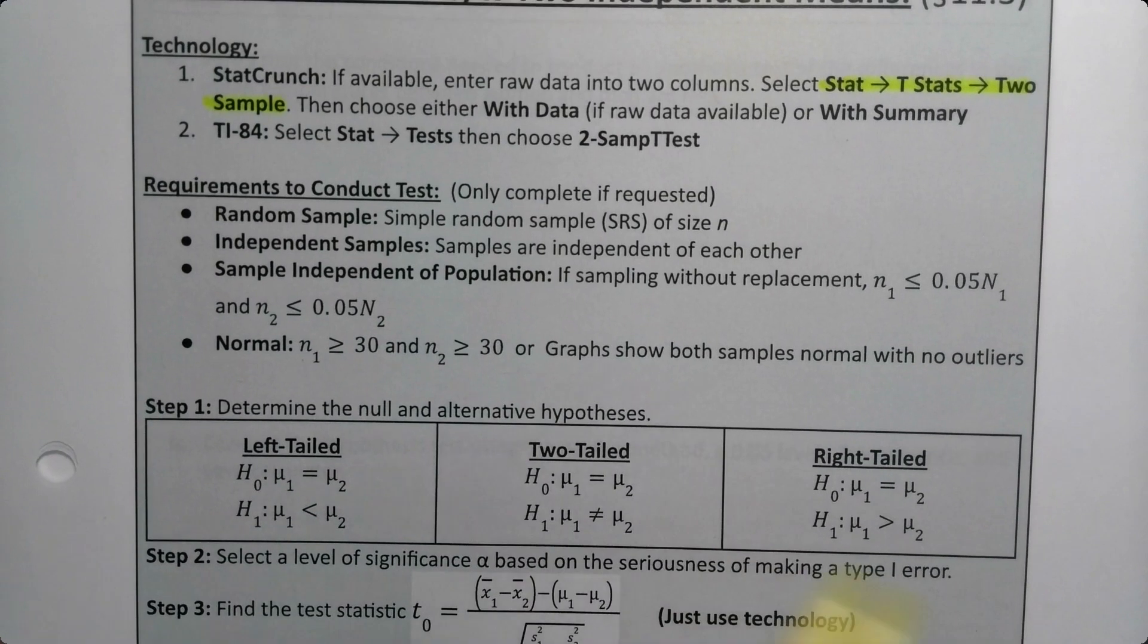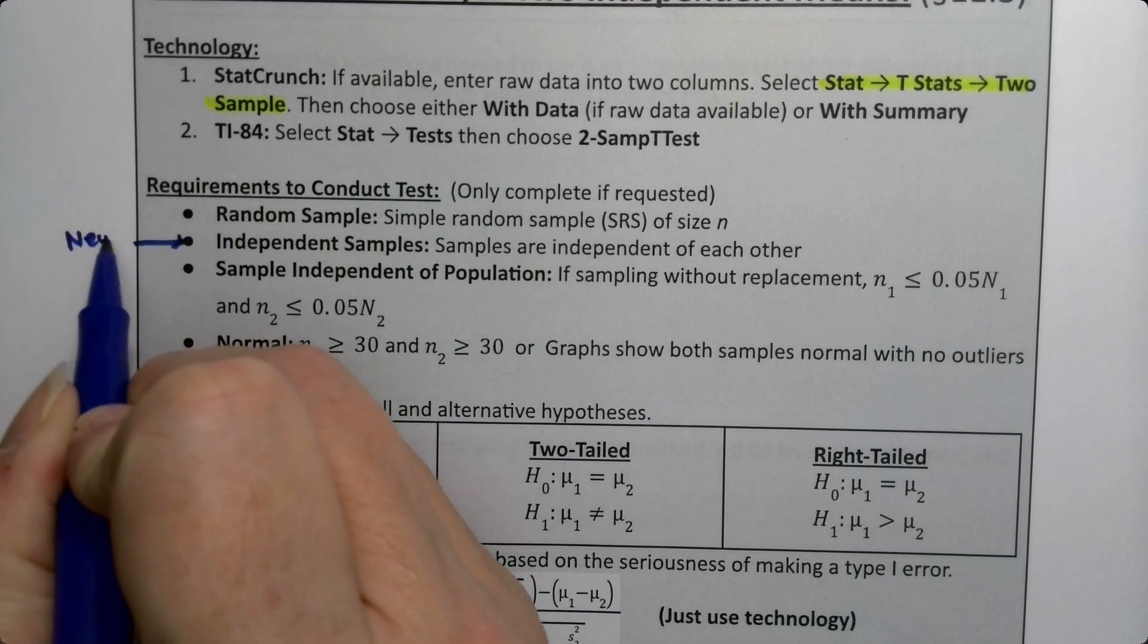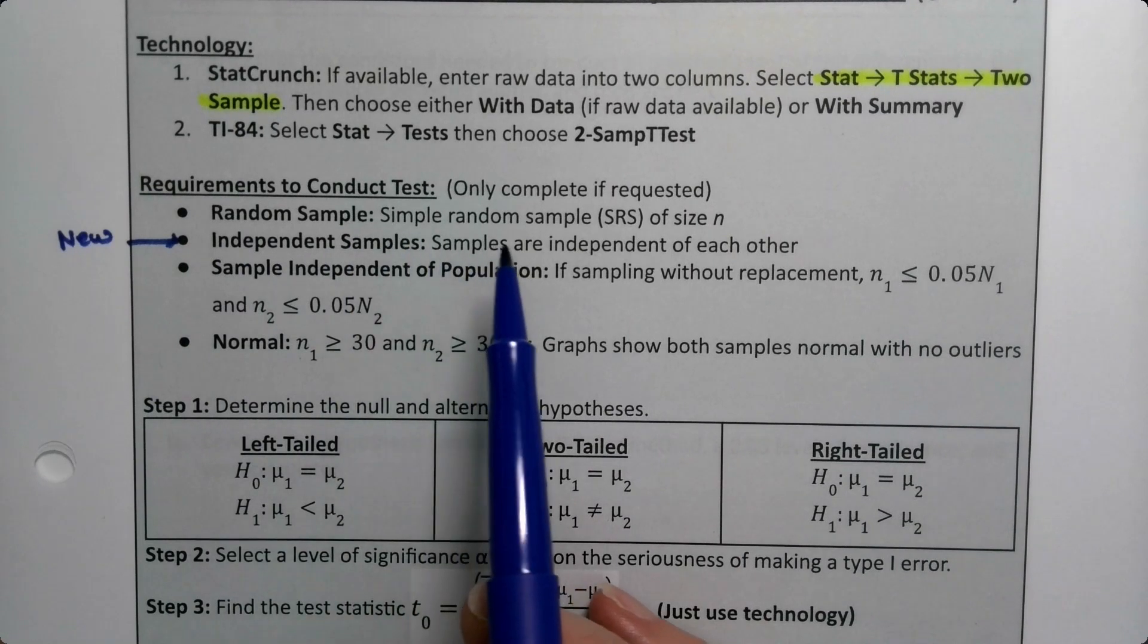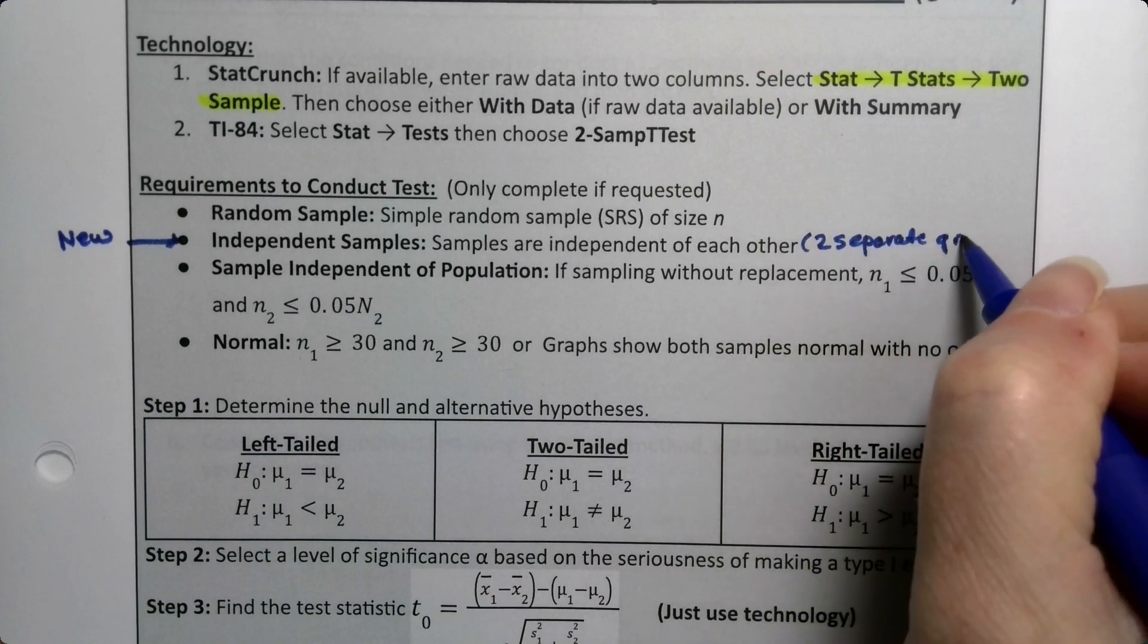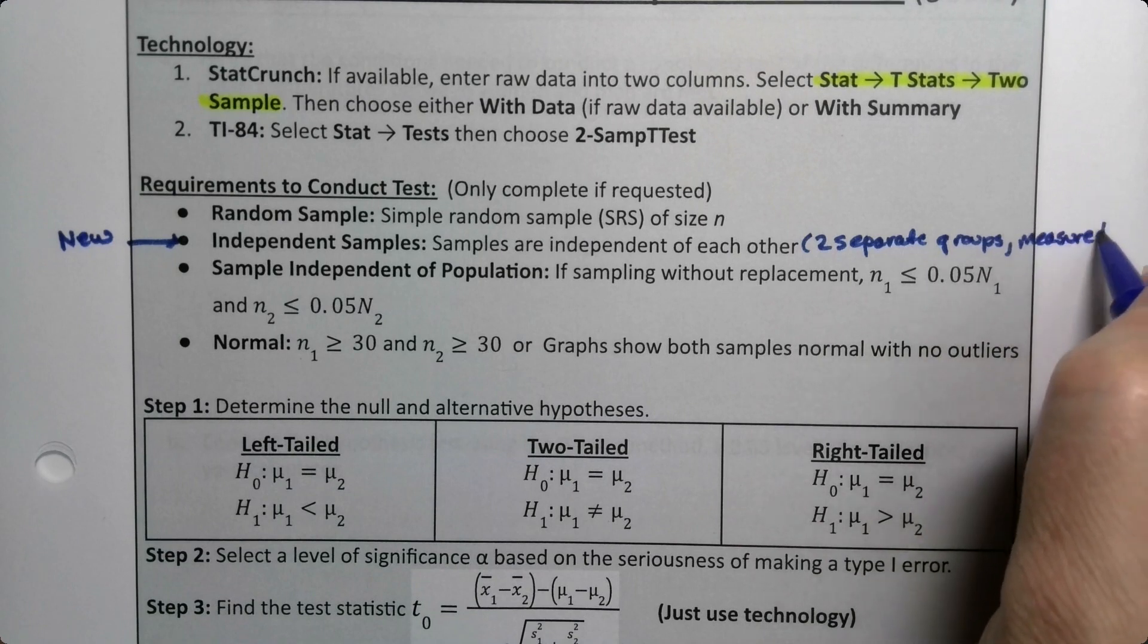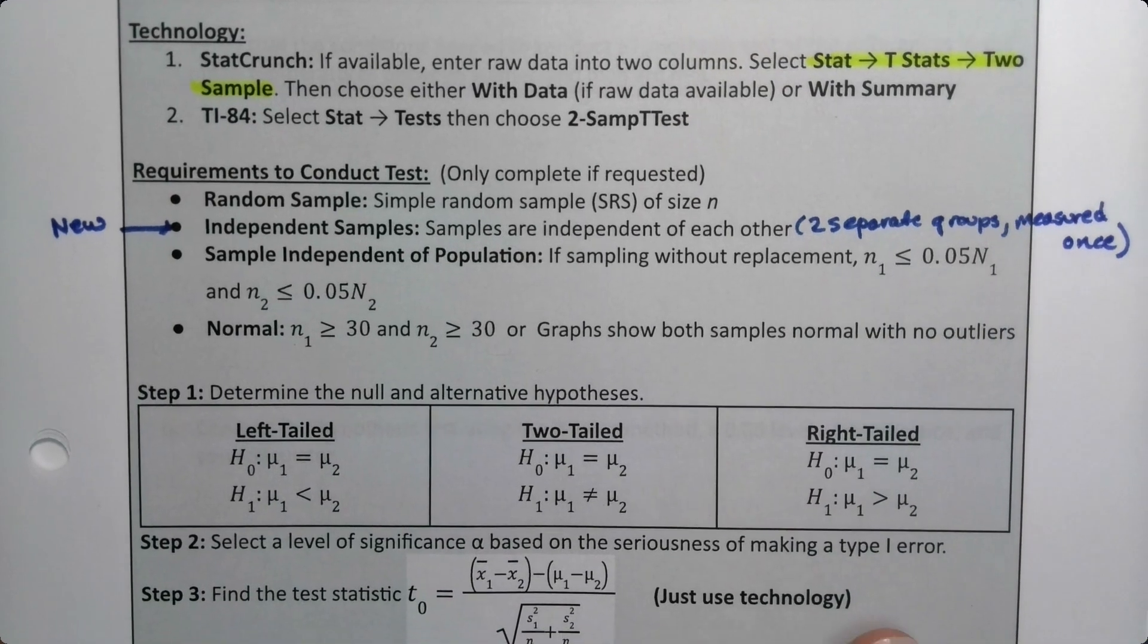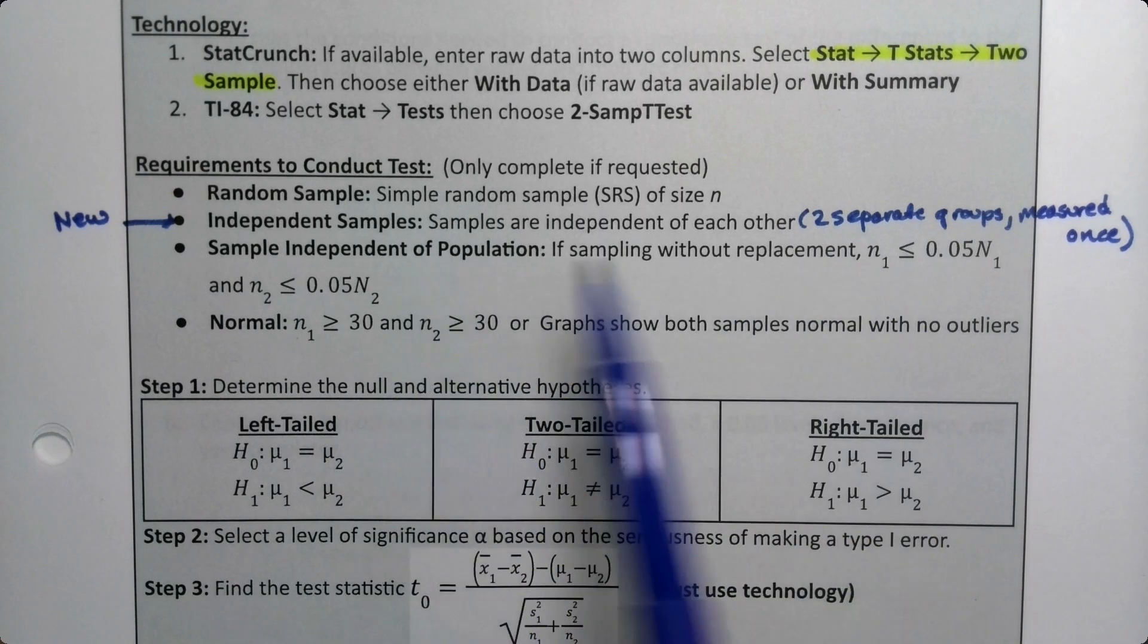Let's look at the requirements because they're a little bit more extensive. The new piece for chapter 11 that we haven't had before is right here. We've had random before, and then this is the whole there's two separate groups measured once. That's this group separate groups, just like in 11-1, except we'll be working with quantitative data as opposed to qualitative data. We're working with means now and not proportions, and then we have to do the independent of the population twice, once for group 1 and once for group 2.